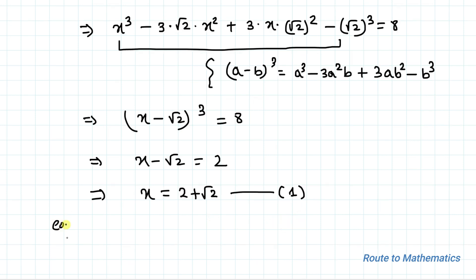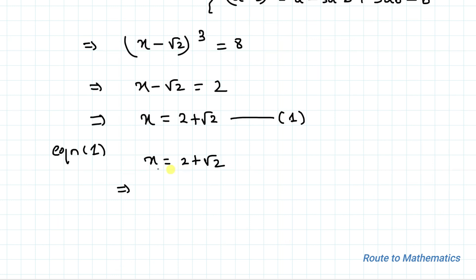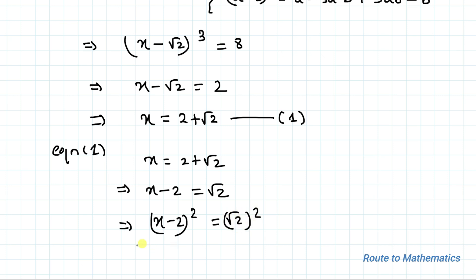Let's take that as equation 1. So from equation 1 we have x = 2 + √2. Taking 2 to the left-hand side we have x - 2 = √2.